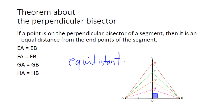So if you choose any point E, F, G, H, or D on this perpendicular bisector, it's going to be equidistant from the extremities, which are A and B.